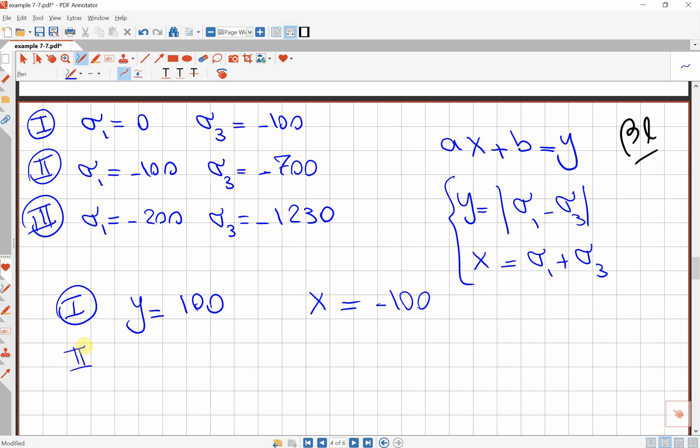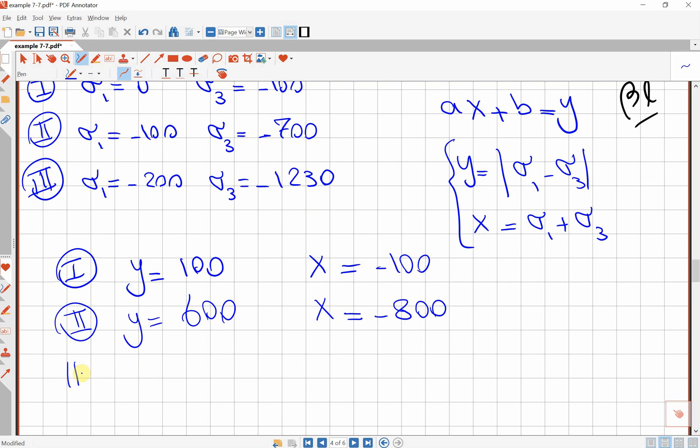For case number 2, y is the difference, which is 600, and x is the summation, which is minus 800. And finally, for case number 3, y is the difference of these two numbers, which is 970, and x is the summation of these two numbers, which is minus 1430.